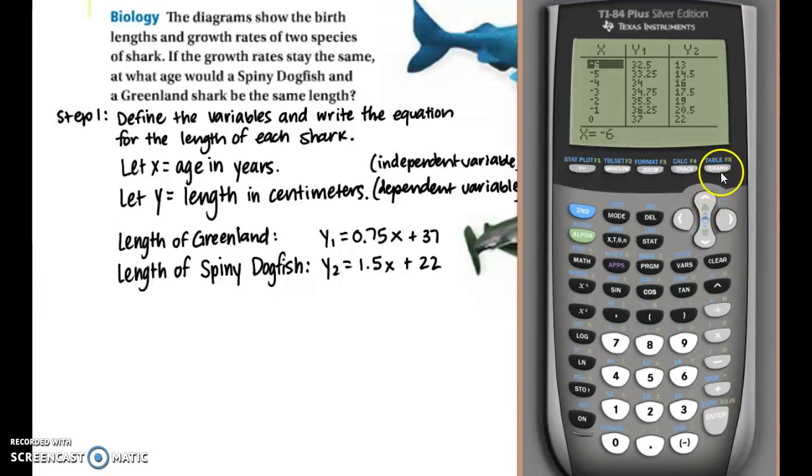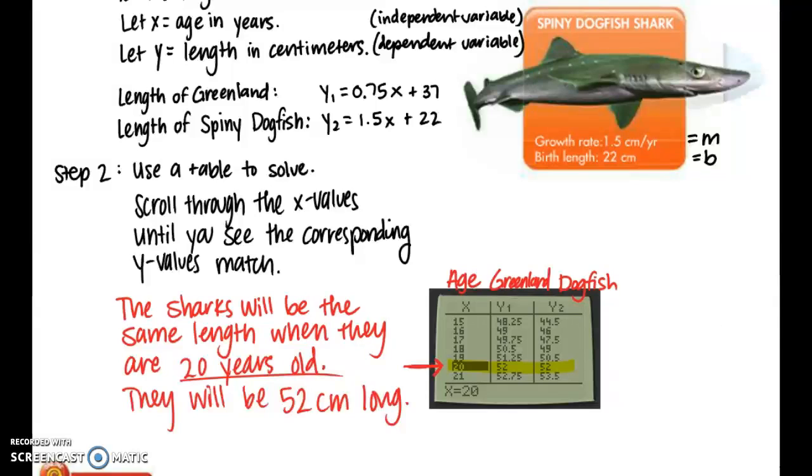And you can take a look at the corresponding y values. And on this screen, I do not see any y values equal to each other because there's negatives for x, which would not make sense. So let's go to the positives and just keep taking a look at the y values. I still do not see them equal to each other, but I do see them getting closer. So let's keep going. They're getting really close. And finally at x equals 20, which means 20 years of age, it looks like they are both the same length. So 52 centimeters. I'd like you to have this table written down in your notes. So feel free to pause here to jot this down. Make sure you label the columns. And now we see that the sharks will be the same length when they are 20 years old. And that length is 52 centimeters long.